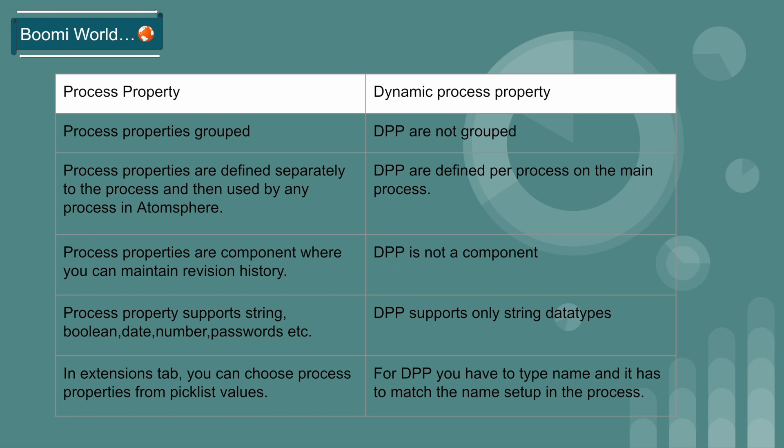After building the process, in the extensions tab you can choose process properties from a picklist — all the process properties you created are visible on the extensions tab directly. For dynamic process property, you have to type the property name that you already specified in the main process, and it is case insensitive — the name should match however you set it in the process.